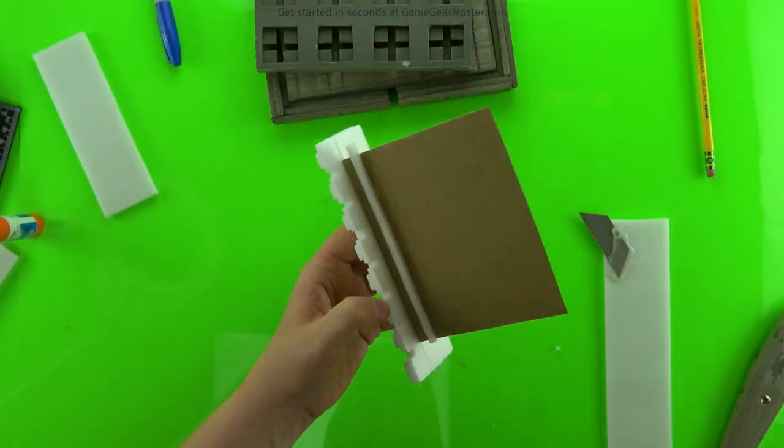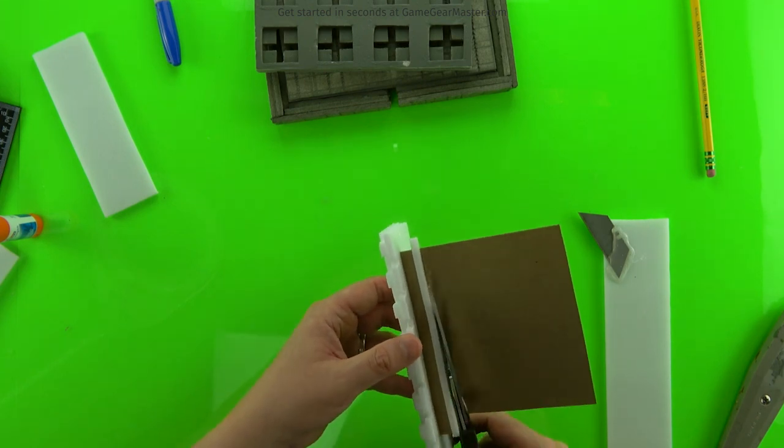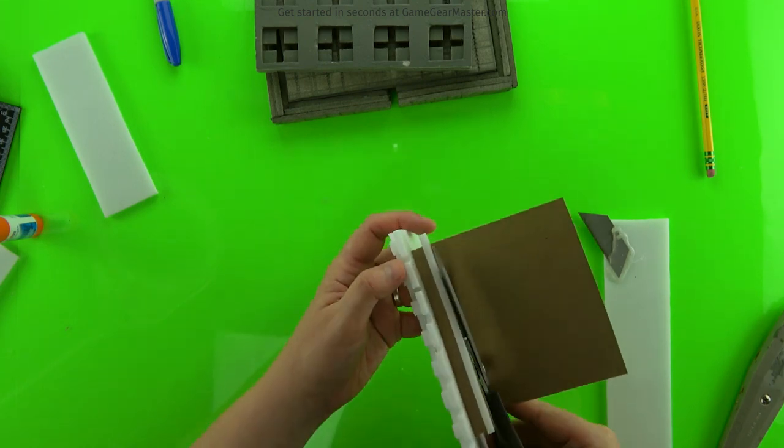And then we're going to cut off the pieces of the crenellation that we don't need. So the back of the cardboard and the two pieces of that foam board strip that are hanging off the edges.